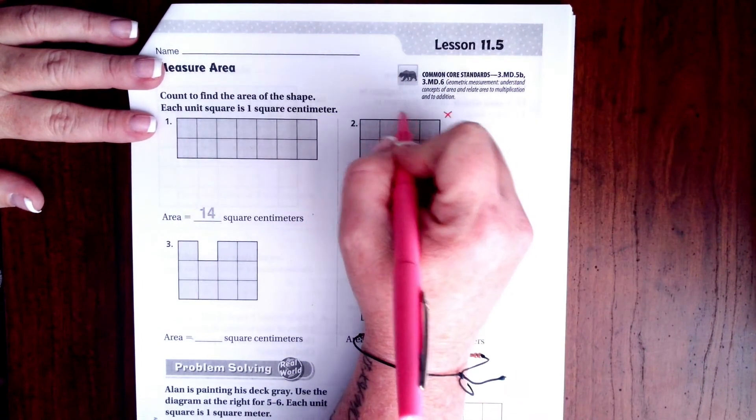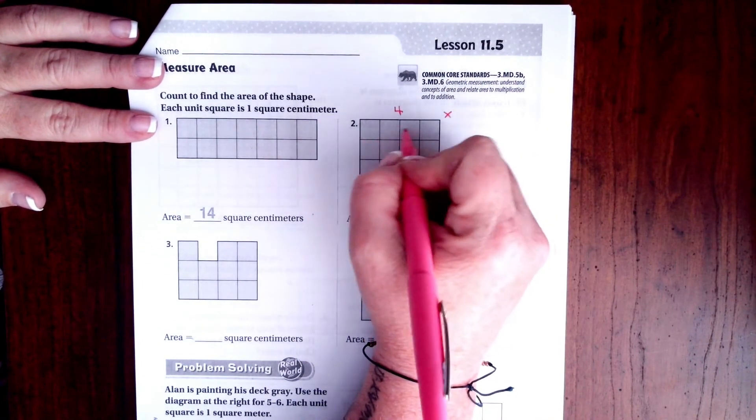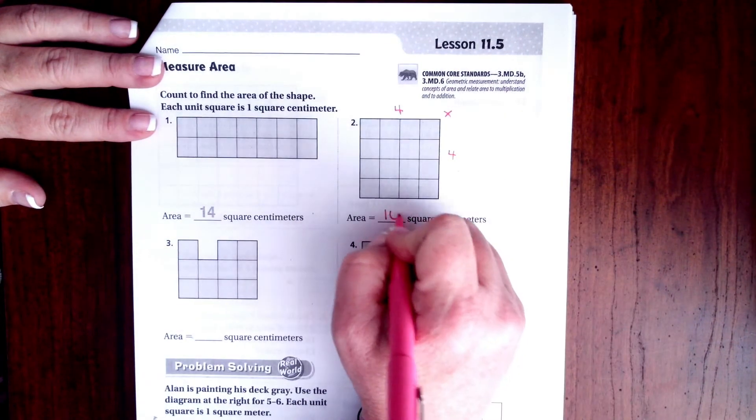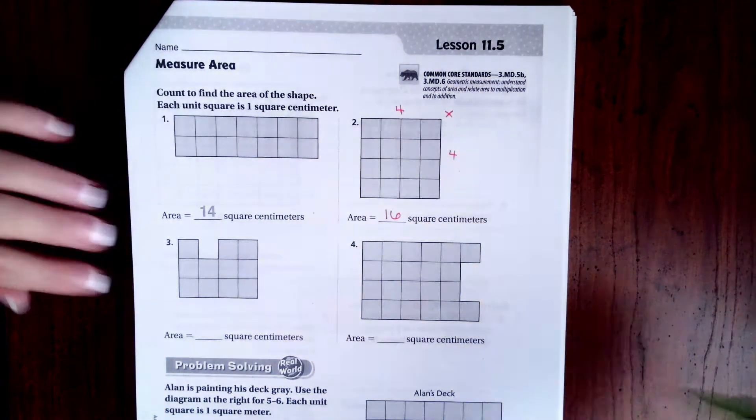So on this side we have 4: 1, 2, 3, 4. And on this side we have 1, 2, 3, 4. 4 times 4 is 16. Not bad guys.